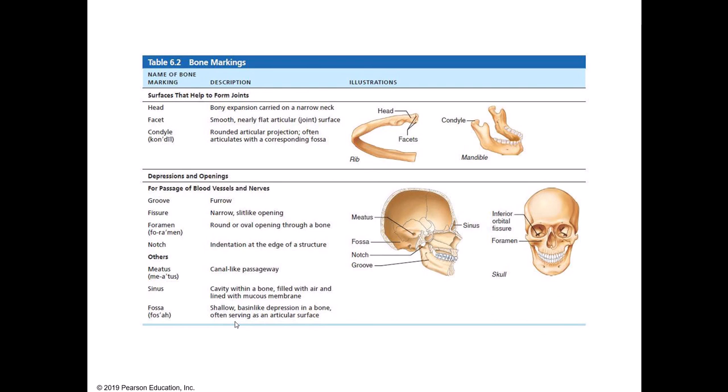The best way to think of the skeleton is really like a human jigsaw puzzle. You'll be required to identify not just these generic bone markings, but most of the prominent and important bone markings on the bones of the skeleton. So it's not just the 206 bones of the body you'll need to know — it's all of these little pieces as well.